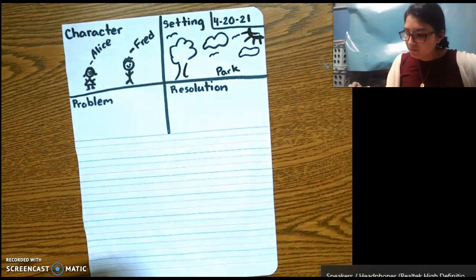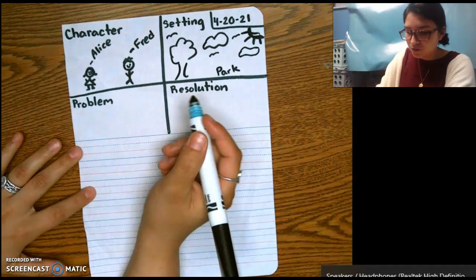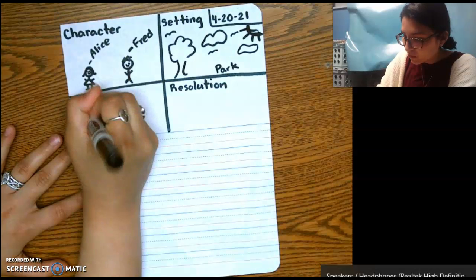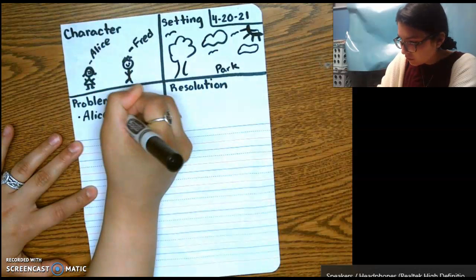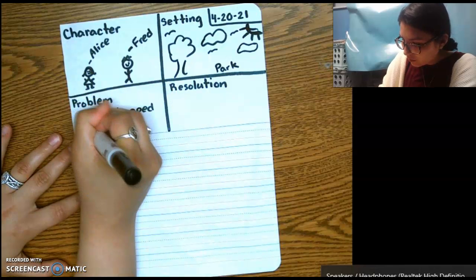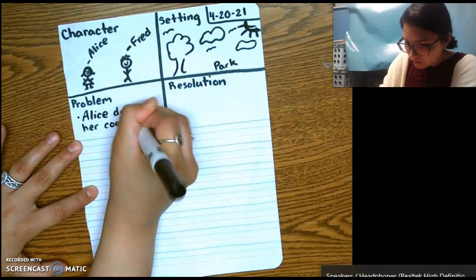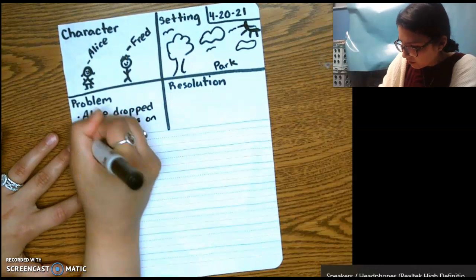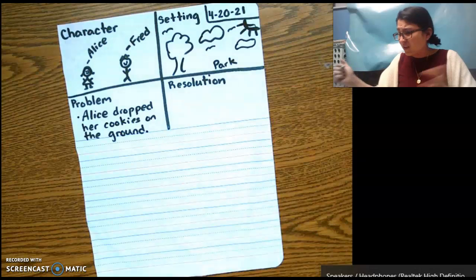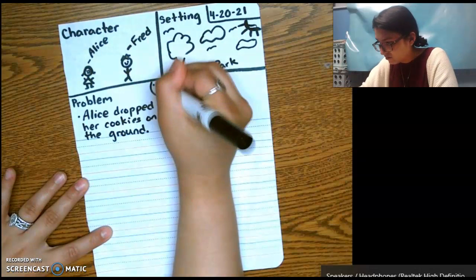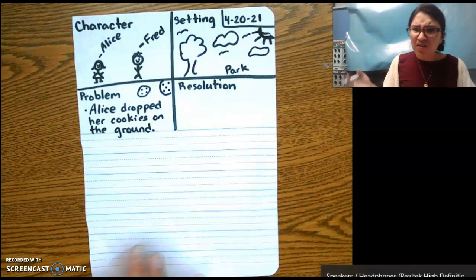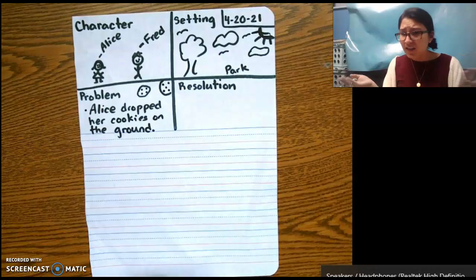My problem. You can draw your problem. My problem is going to be, I'm going to write mine though. Alice dropped her cookies on the ground. So I dropped her cookies on the ground. Now all the cookies are, let's make a cookie. Cookies. Now look, these are dirty. They have dirt on them so she can't eat them anymore.